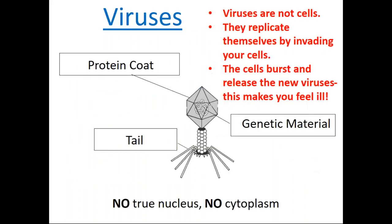When it comes to viruses, viruses have a protein coat. They are not counted as living organisms because they don't have a nucleus, cell membrane, or cytoplasm. They have a tail in order to move and they have genetic material in the form of DNA and RNA. Many infectious diseases are caused by viruses. Most viruses are so small that they cannot be seen with a light microscope.